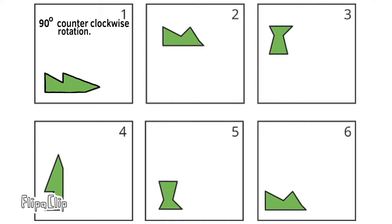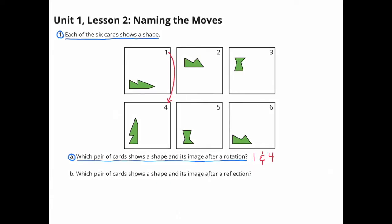After a 90 degree rotation counterclockwise, the shape matches card 4. Cards 1 and 4 show a shape and its image after a rotation.